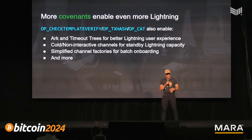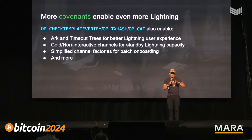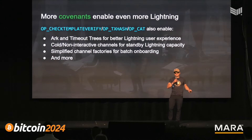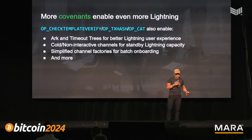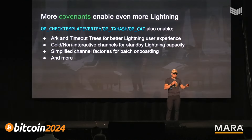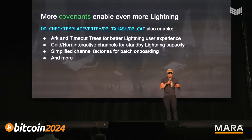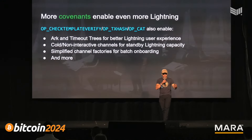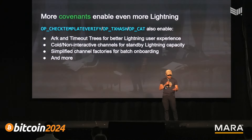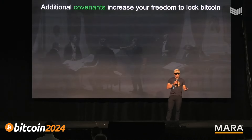There's also a concept called cold channels, where you can have a kind of lightning channel in potentia in a cold wallet, and when you reveal it to the channel partner it becomes a lightning channel — so now you can have your cold storage and eat it too. Also, simplified channel factories: right now you can make a lightning channel factory but it's an interactive protocol, whereas covenants can make that simpler and let you onboard many users to lightning with a single transaction.